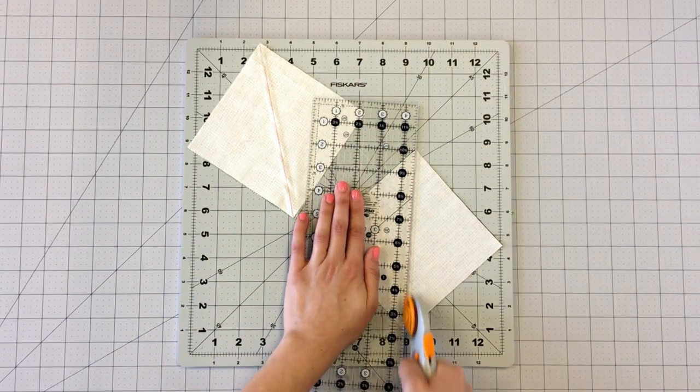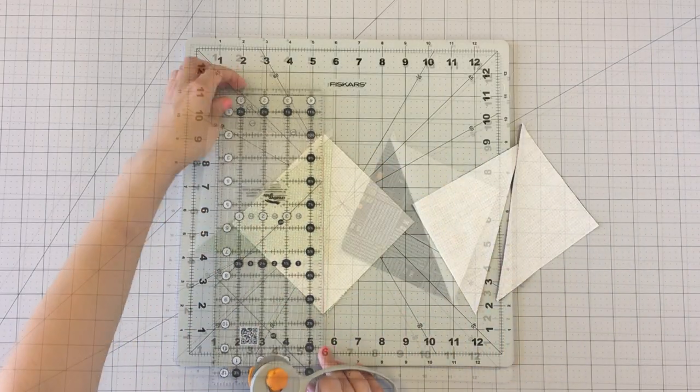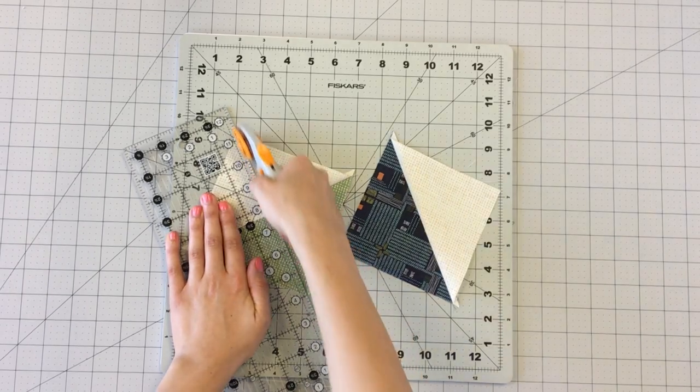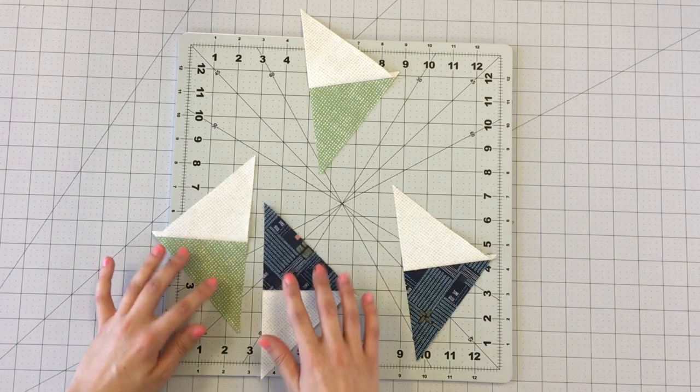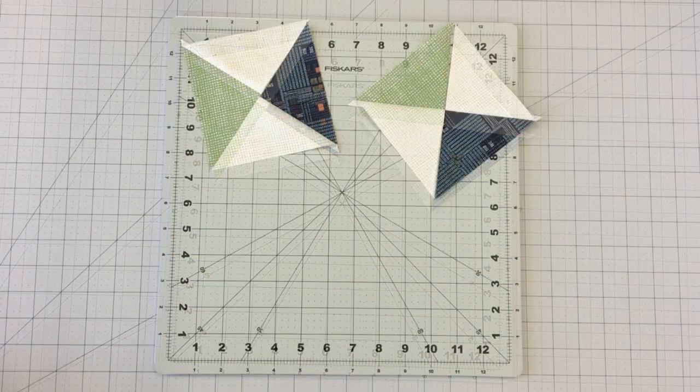Cut all of your half square triangles in half on the diagonal. Sew all your BD triangles to a CD triangle to form four hourglass blocks.